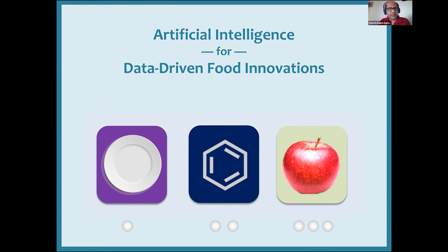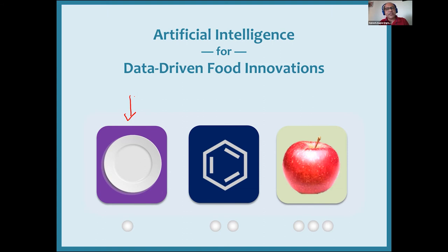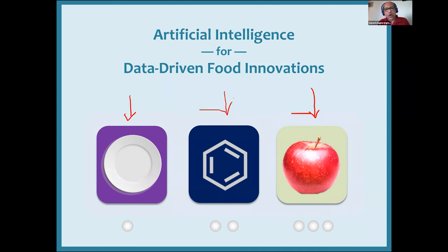What we are trying to do in our lab is bring about data-driven food innovations using a data-centric and AI-centric platform. There are three main dimensions we are working on — though others exist as well. One is recipes: how can we dramatically change the way we look at them? Second is nutrition and health: how can we make food more tasty, nutritious, and healthy? Third is changing food at the level of molecules. I'll cover these three angles in the next 15 minutes.